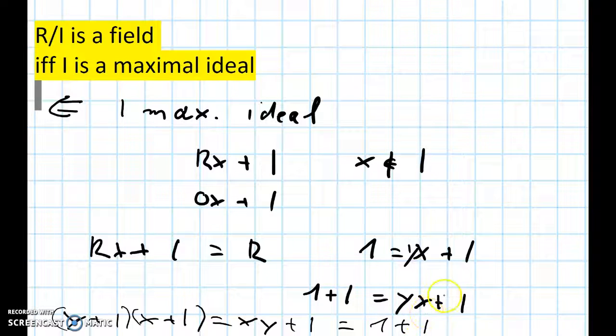So for every element x plus I, we have found an inverse y plus I, and this shows that indeed R over I is a field, because the rest of the axioms for a field are just inherited from R. And this concludes our proof. Thank you for watching, see you next time!